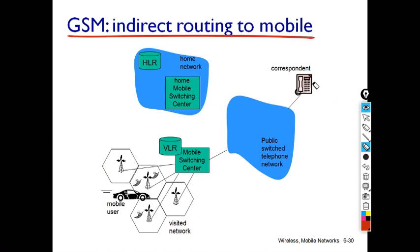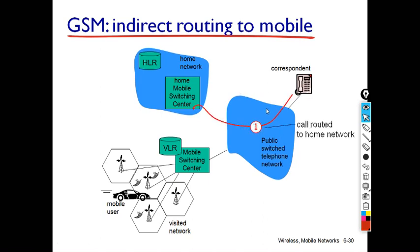Here you can see our correspondent wants to make a call to the mobile user. The call is routed through the Public Switched Telephone Network to the home MSC. As soon as the call is received by the MSC, it verifies the call information through the HLR. From the HLR, the MSC learns whether the user is in the home network or in a foreign network. This completes the first leg of the call.